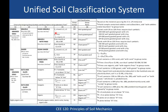For a clean gravel in column 4, we look at the coefficient of uniformity and coefficient of curvature. If CU is greater than or equal to 4 and 1 ≤ CC ≤ 3, then we have well-graded gravel, GW. Otherwise, if those criteria are not met, it's poorly-graded gravel, GP. GP covers soils that are really uniform — CU less than 4 — or soils that have either a really low or really high CC, such as gap-graded soils.